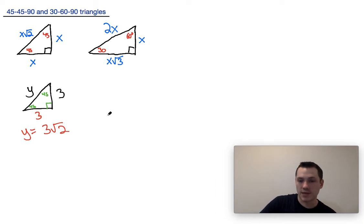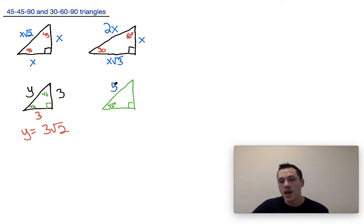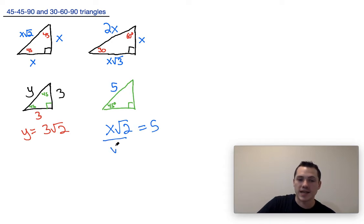A slightly more complicated problem is one where they provide you with the hypotenuse of a 45-45-90 triangle. And let's say they told you this hypotenuse was 5. Well, how could we figure out what the other sides are equal to? Well, looking at the 45-45-90 triangle that's provided on the SAT, we can see that the 5 side is equivalent to the x root 2 side. So what we do in order to solve for x is we set x root 2 equal to 5. We would then divide both sides by the square root of 2.